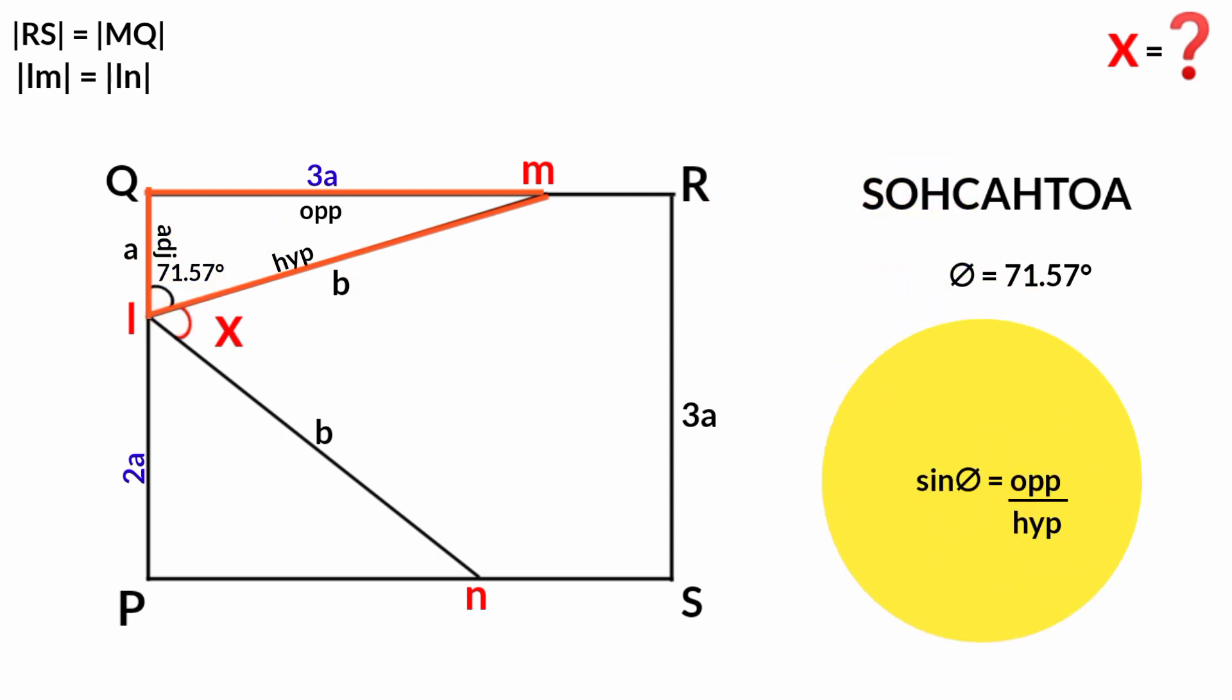Now using sin theta equals opposite over hypotenuse, theta is 71.57 degrees, opposite is 3a, and hypotenuse is b. So sin 71.57 is 0.9487. If we multiply both sides by b, we get 0.9487b equals 3a. Dividing both sides by 0.9487, we get b equals 3a over 0.9487. If you press your calculator, it's 3.1622a. So b equals 3.1622a.